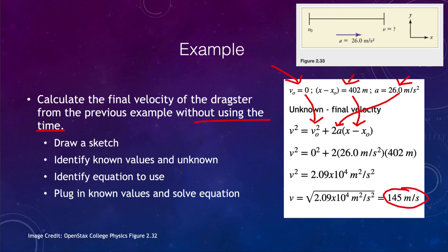That is the square of the velocity, so we take the square root to get the velocity. We find that our final velocity is 145 meters per second — that is the velocity after the acceleration over that distance. Here we were able to solve for the velocity without knowing the time, because we knew the acceleration and the displacement. We did need the time to get the displacement in the first problem, but depending on what information you're given, it determines which equation you'll use.